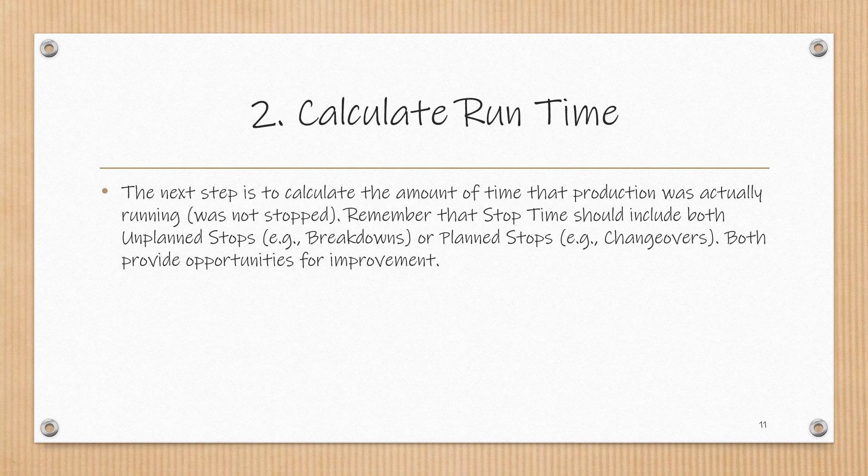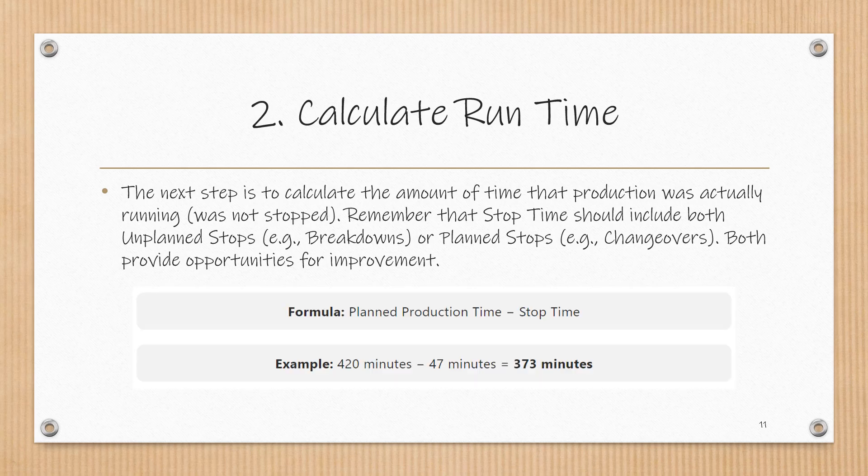The next step is to calculate the amount of time that production was actually running, or not stopped. Stop time should include both unplanned stops like breakdowns and planned stops like changeovers, as both provide opportunities for improvement. The formula for runtime is planned production time minus stop time. In our example, 420 minutes minus 47 minutes of downtime results in 373 minutes of runtime.